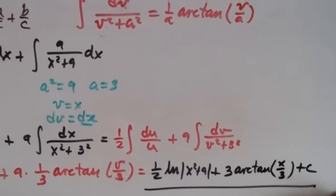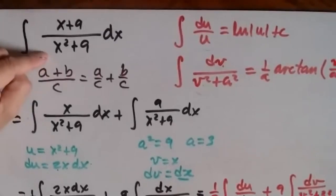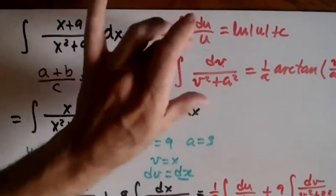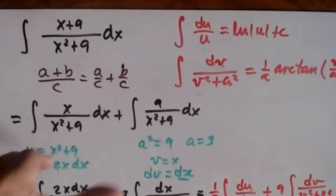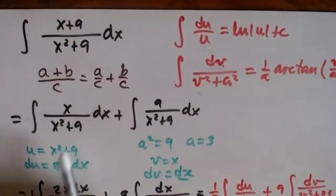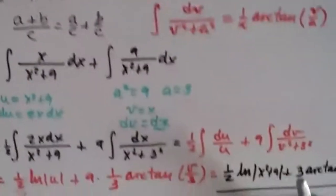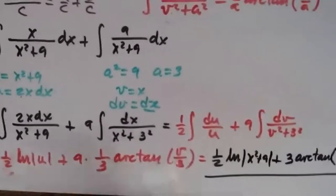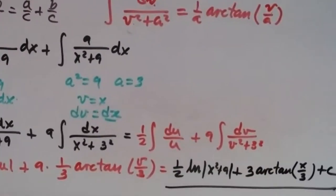The key insight: the original integral couldn't be solved as one block, but splitting it into two simpler fractions allowed us to solve each part. Apply u-substitution to each, use the matching formula, and combine. That's it.